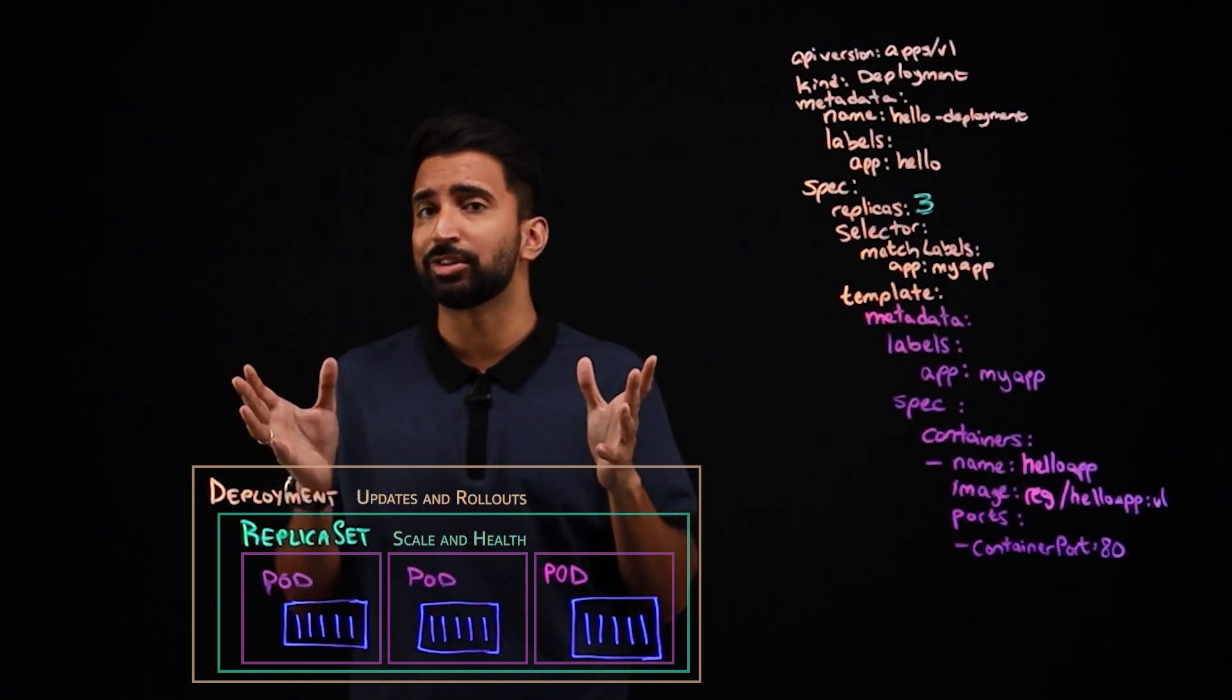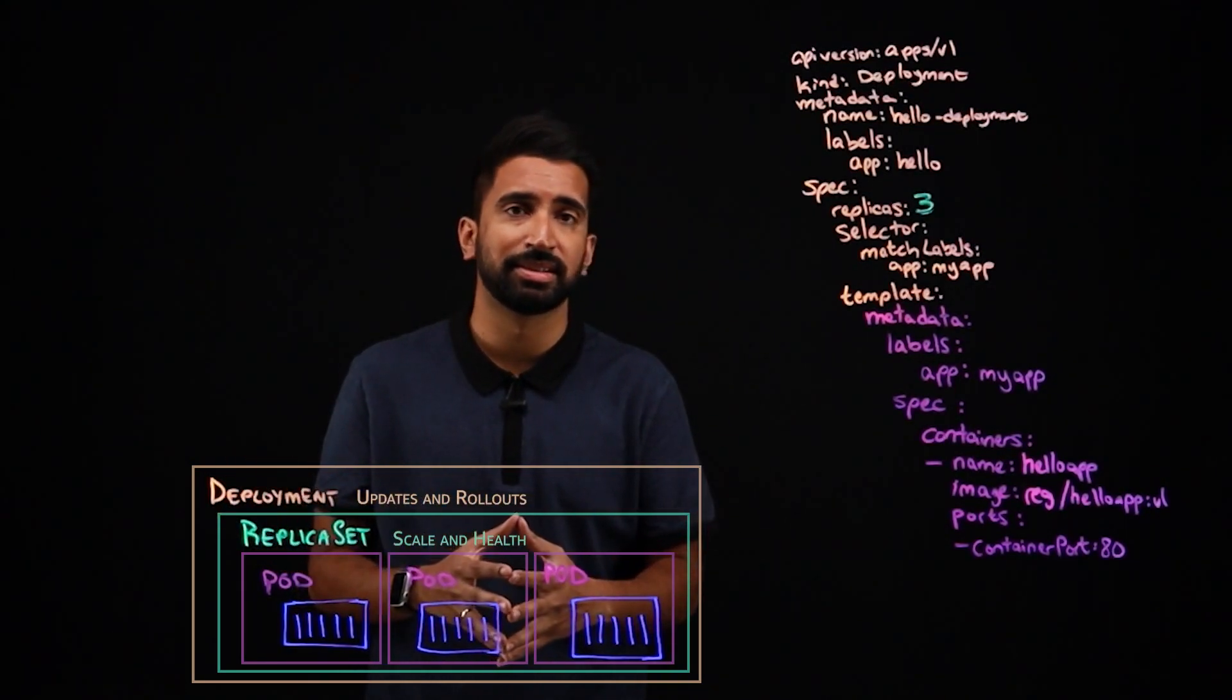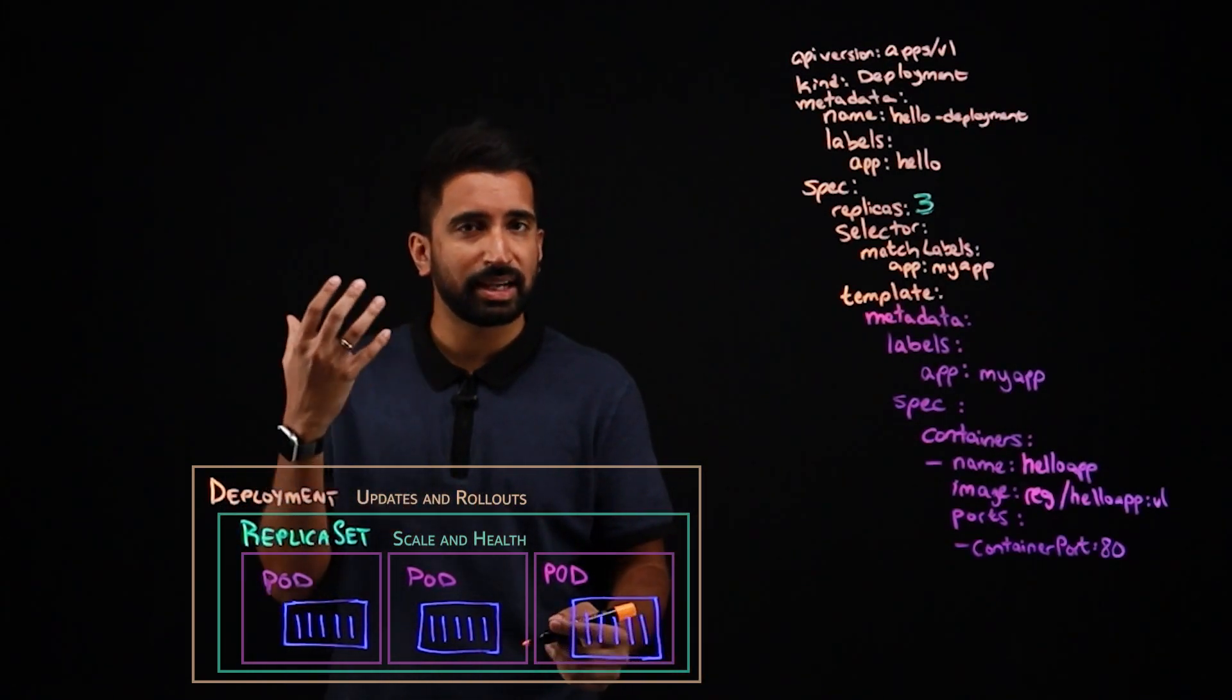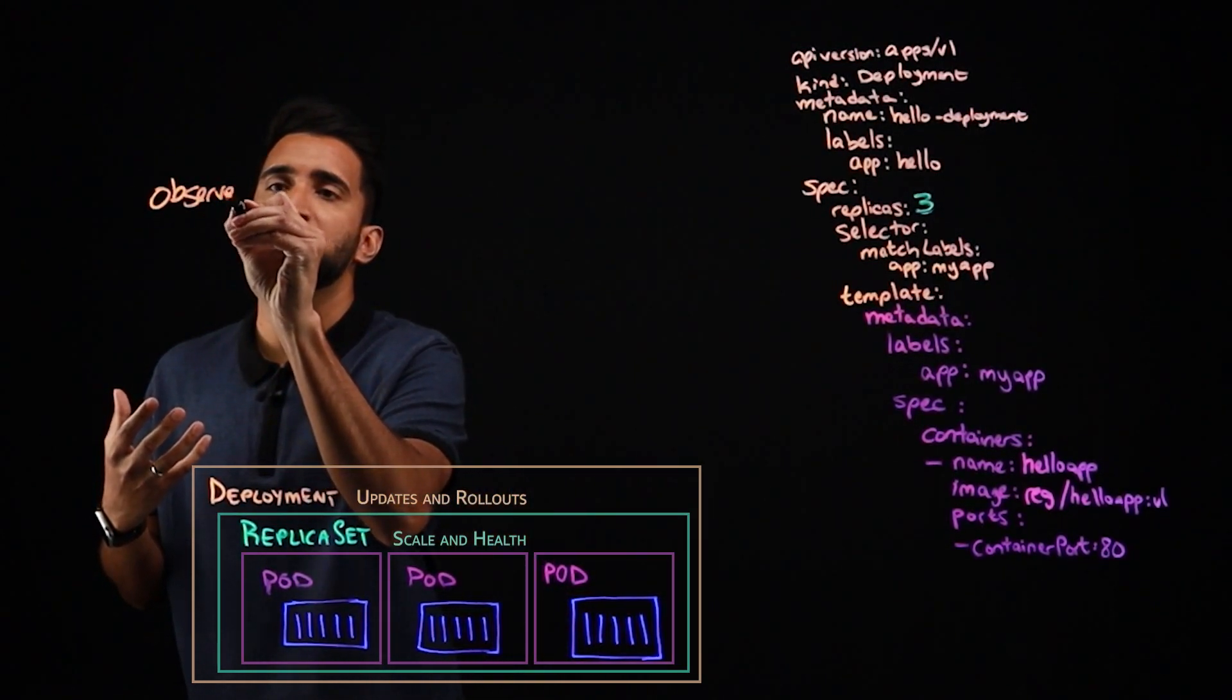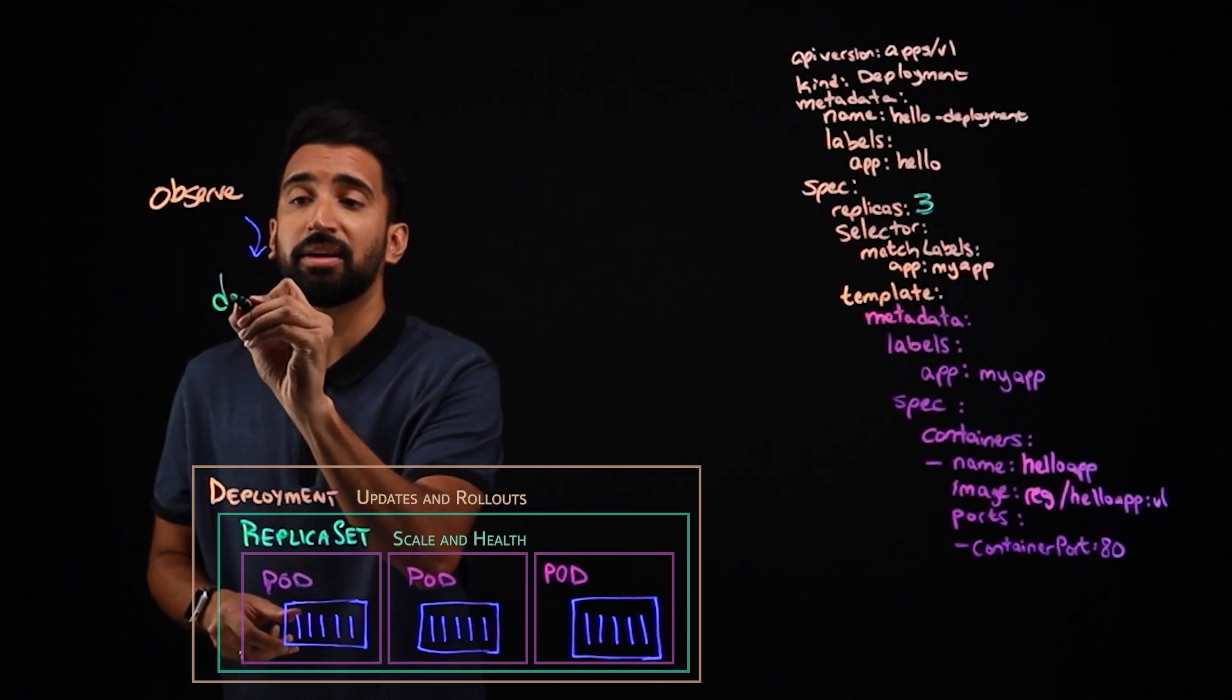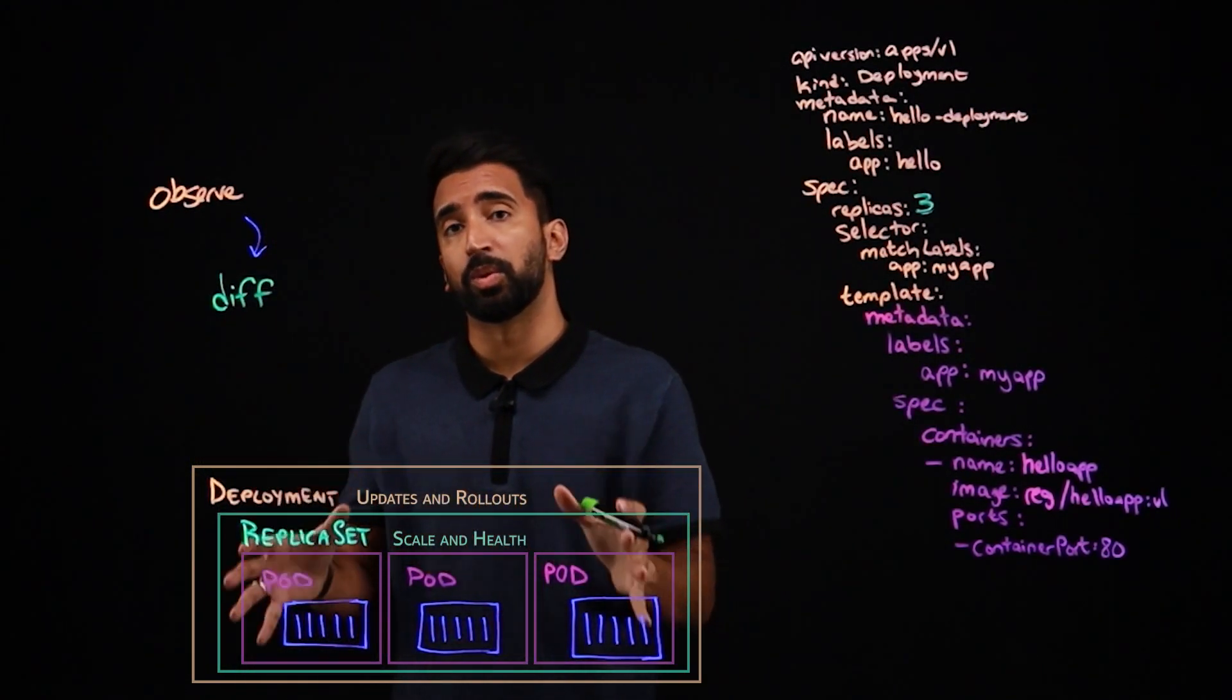But how exactly is Kubernetes able to manage the lifecycle of these objects? Well, it uses a controller mechanism, also known as a control loop. Let's take a look at what that looks like. So the first thing Kubernetes is going to do is going to observe maybe some of the config that you've passed in. But the more interesting piece, I think, is when it runs a diff. So this control loop is going to check if the config matches the state of the world.